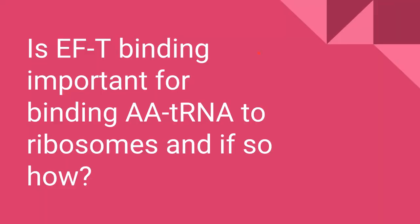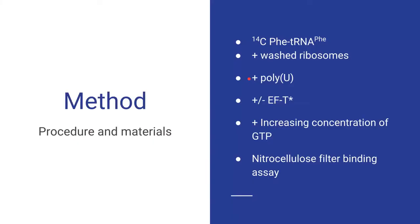The first experiment by Ravel was one of the first to determine whether or not EF-T was important for binding aminoacyl-tRNA to ribosomes. In addition, it sheds some light on the mechanism involved. For this experiment, 14C radiolabeled phenylalanine-tRNA was added to washed ribosomes and poly-U.